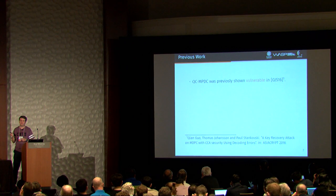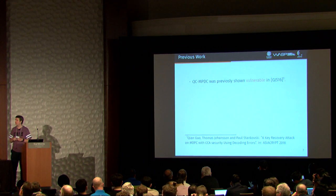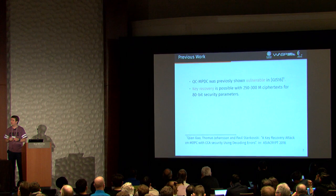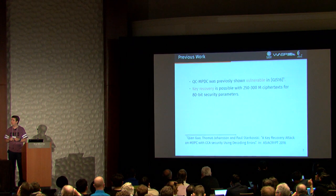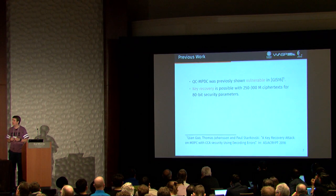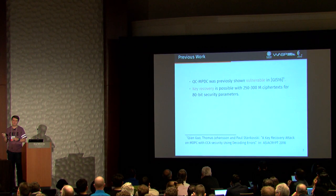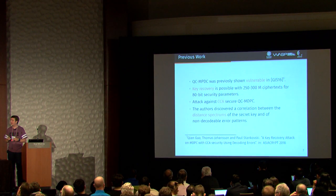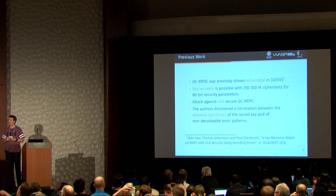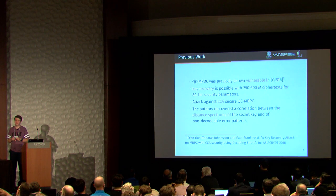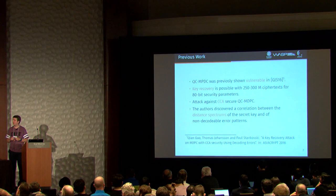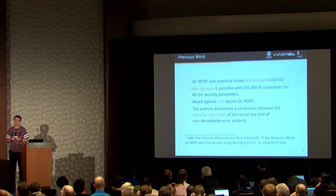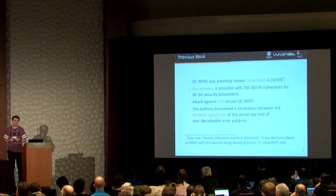So I want to show you first an attack, first published in Asia Crypt 2016, where the authors did a key recovery attack with about 250 to 300 million ciphertexts. This is for 80-bit security parameters. It was against the CCA-secure version of MDPC. And they did this by discovering a correlation between the distance spectrum of the secret key and the distance spectrum of the non-decodable error patterns.